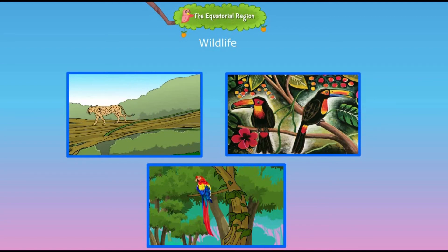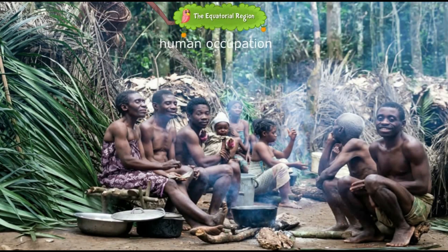The tribes of the equatorial region include the Semangs, the Kubus, the Pygmies, the Dayaks, the Bantus, and Amazon Indians. The Semangs, Kubus, and Pygmies are hunter-gatherers, and the Semangs also practice horticulture. The Dayaks, Bantus, and Amazon Indians practice shifting agriculture.